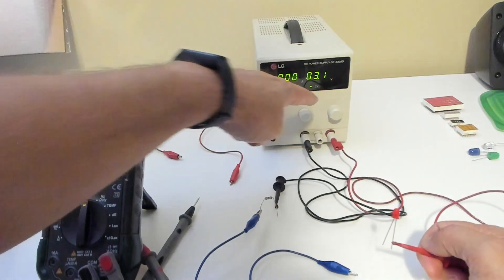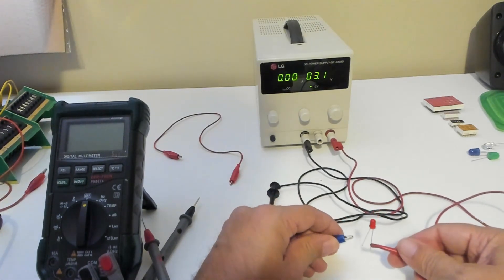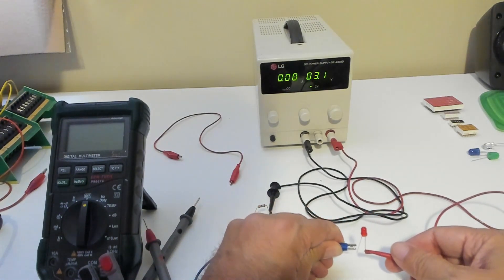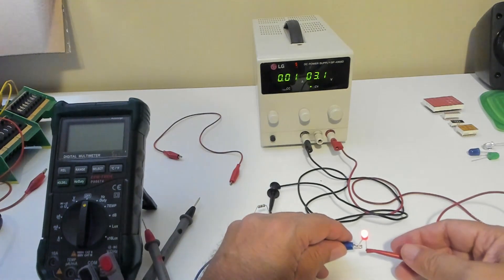So now we have the power supply connecting to the resistor which is connecting to the cathode which is the short wire of our LED and then the anode is connected to the positive of our supply and you can see the light lights up.